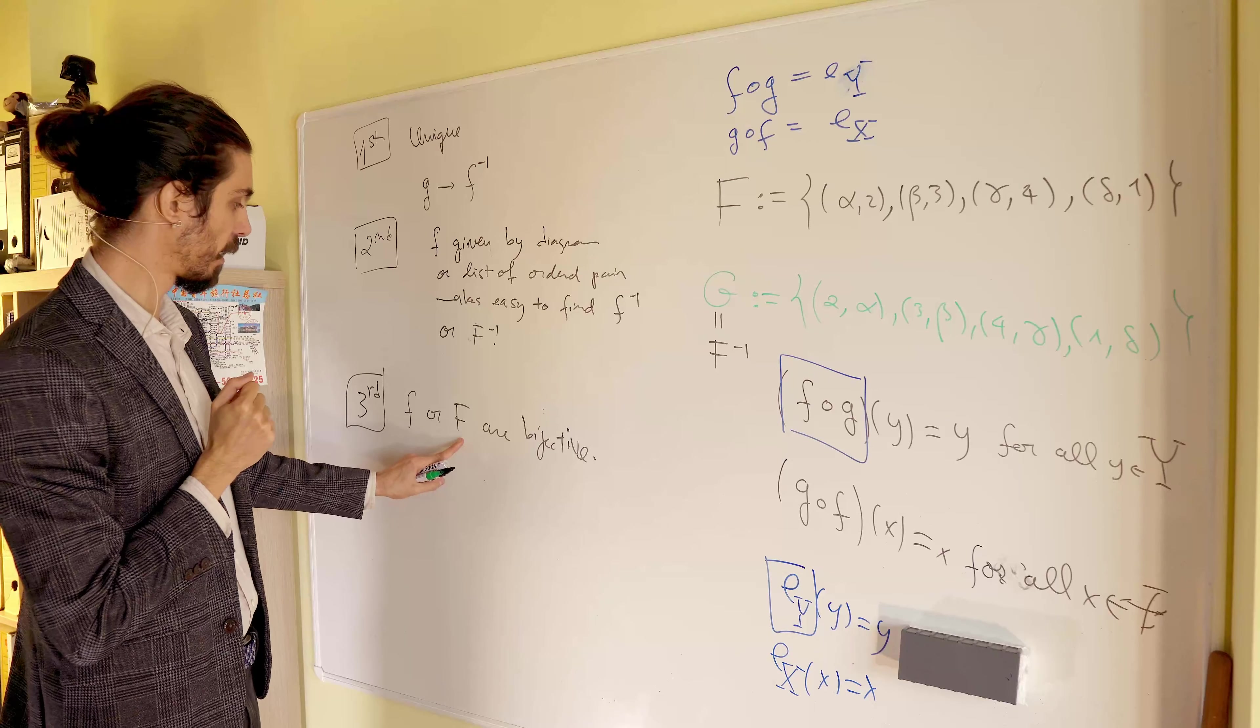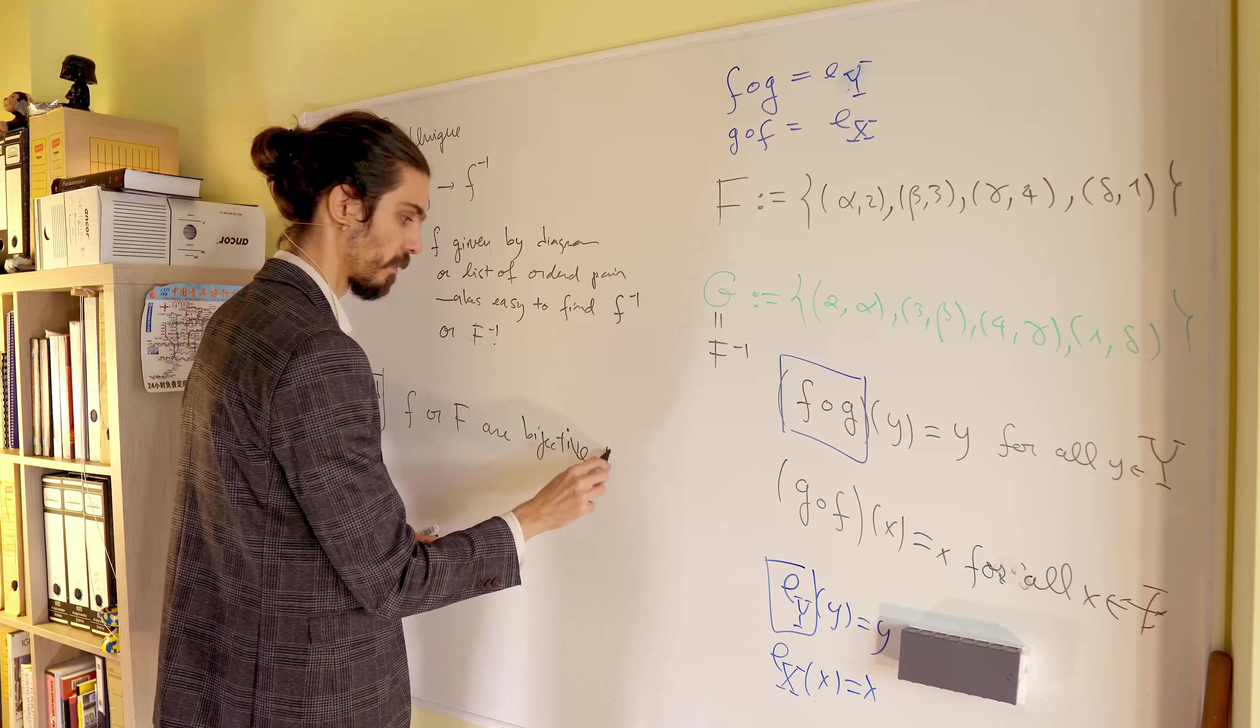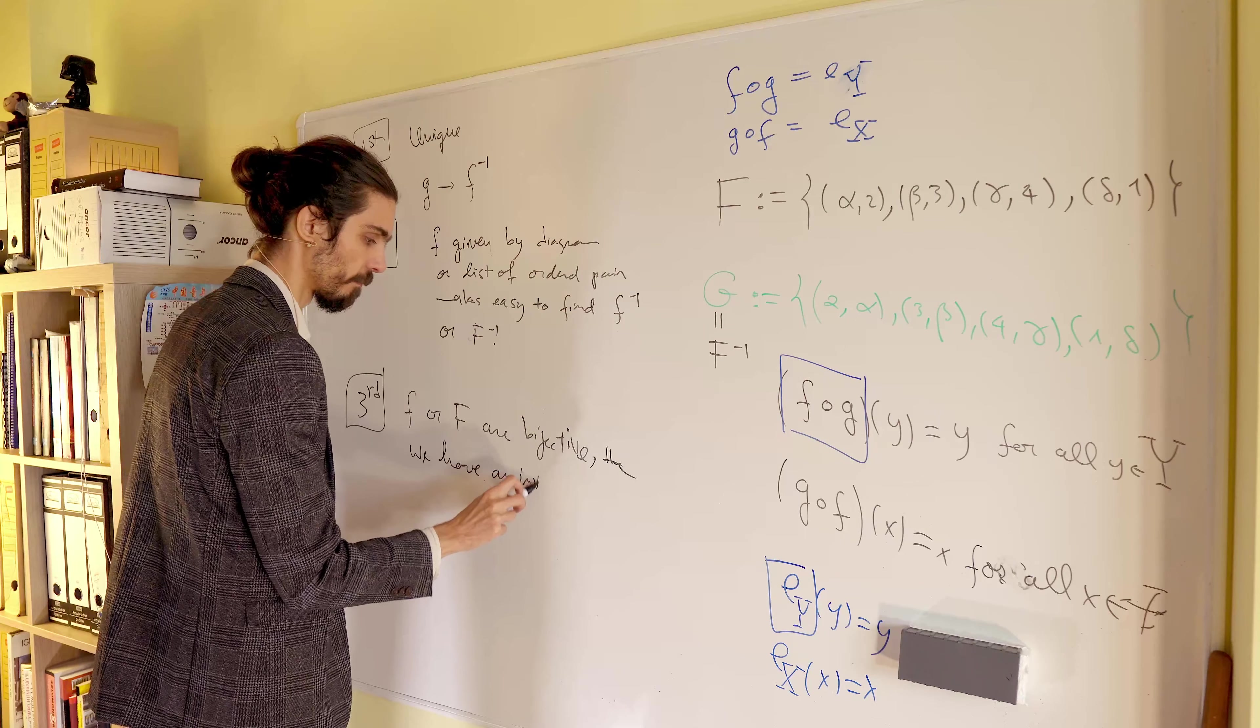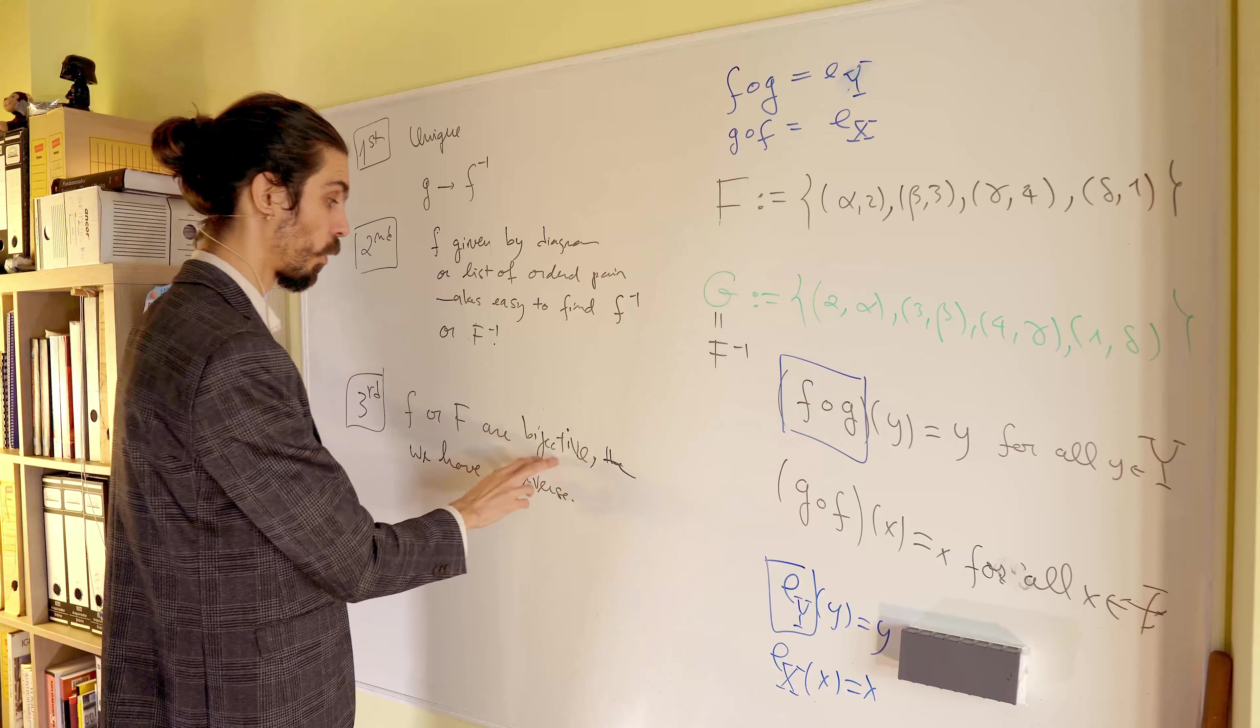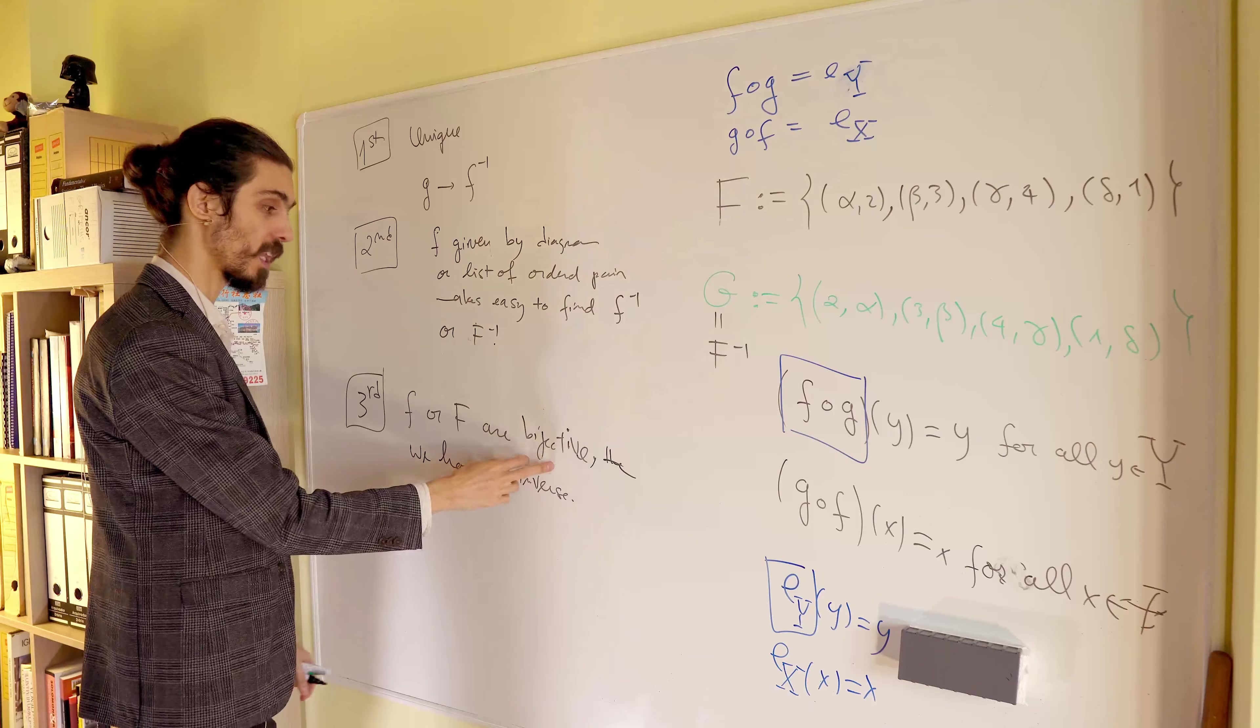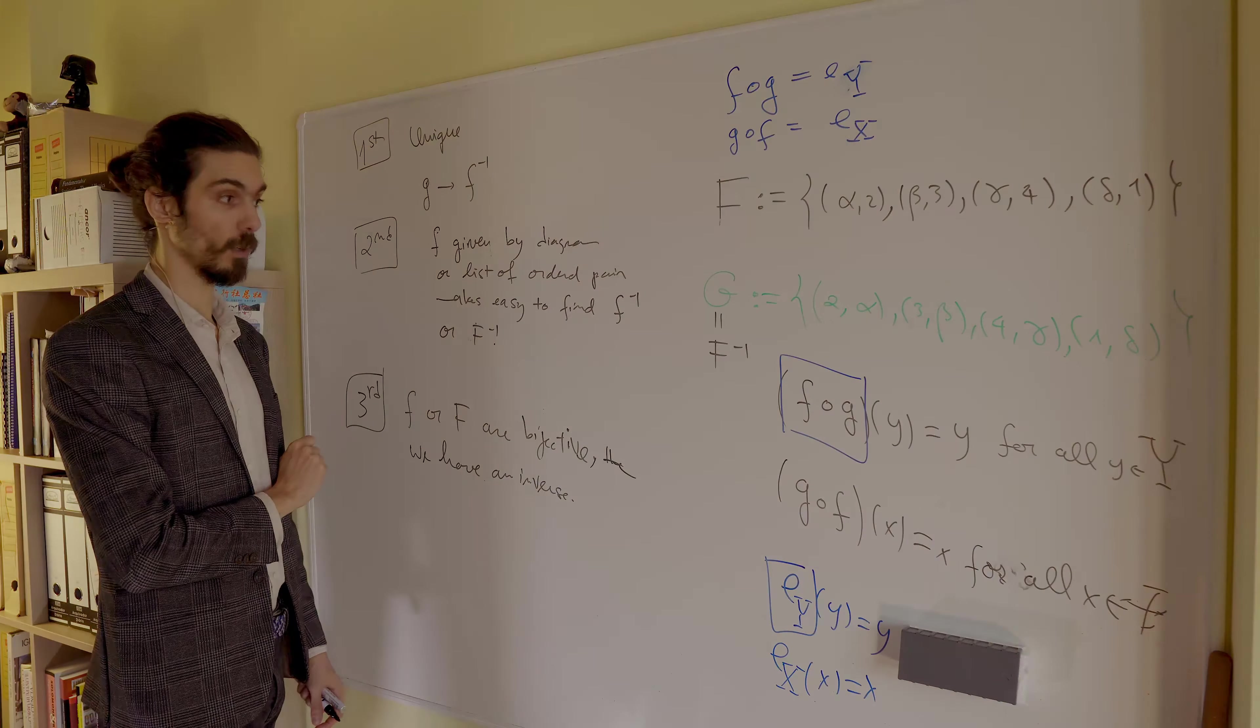So, if f, when f or big f are bijective, well, then we have an inverse. Then, we have an inverse, okay? You will see later, when it's not bijective, first, why does it not have an inverse and what should we do about it, okay? But for now, it's just a fact of life. You need a bijective function to have an inverse function, okay?